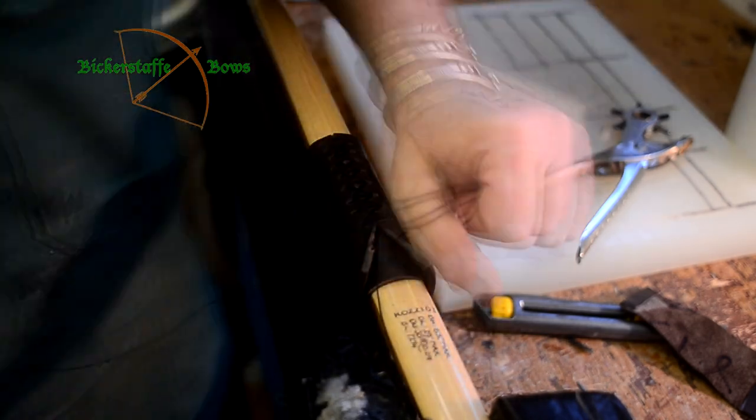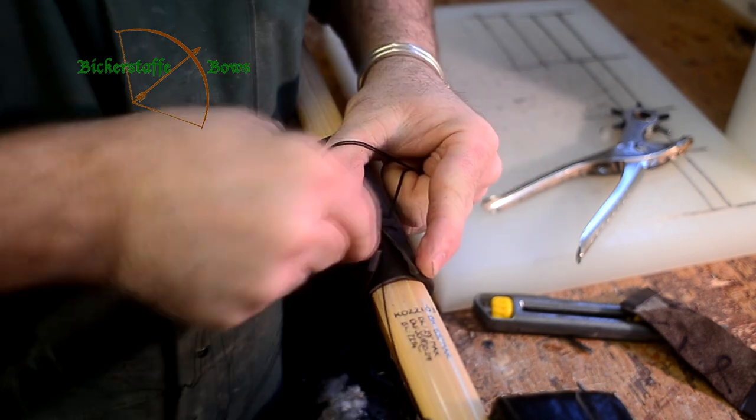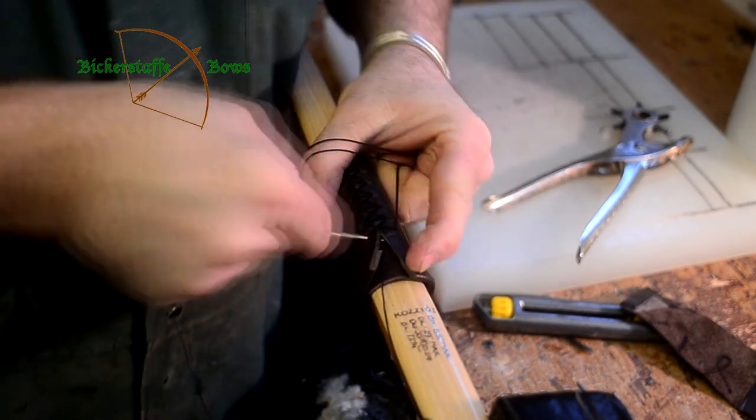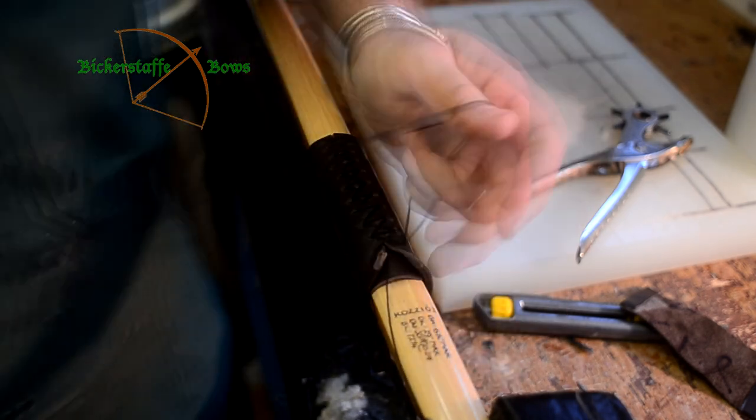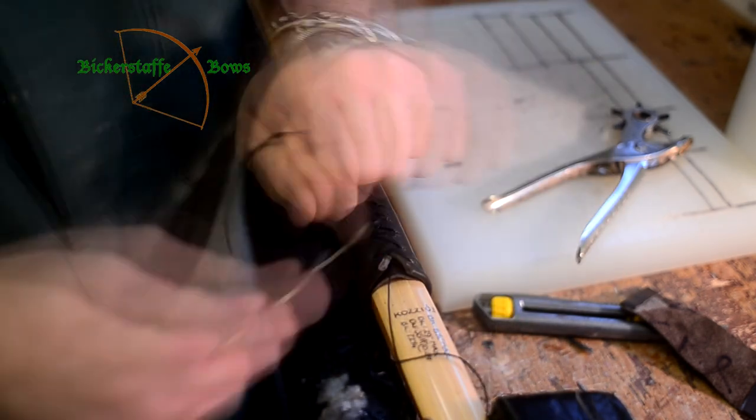You'll be able to see underneath the grip the labeling which gives the bracing height, the draw weight, the draw length and the bow length - all useful bits of information you may need to refer to later.